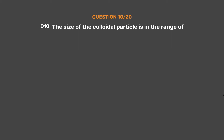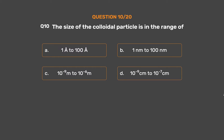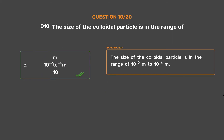Question number 10. The size of the colloidal particle is in the range of: Option A: 1 Å to 100 Å. Option B: 1 nanometer to 100 nanometers. Option C: 10⁻⁹ meters to 10⁻⁶ meters. Option D: 10⁻⁹ centimeters to 10⁻⁷ centimeters. The correct answer is Option C: 10⁻⁹ meters to 10⁻⁶ meters. The size of colloidal particles is in the range of 10⁻⁹ meters to 10⁻⁶ meters.